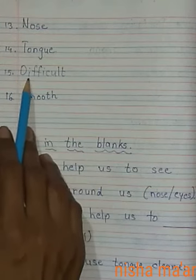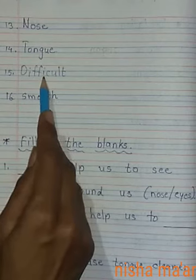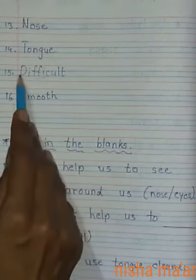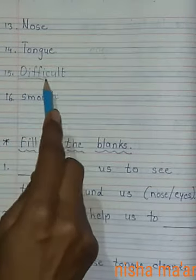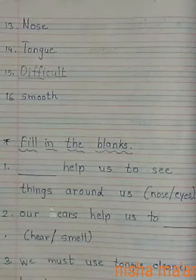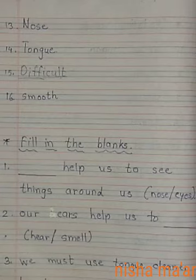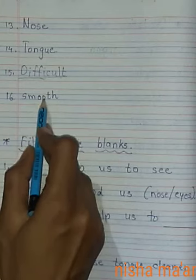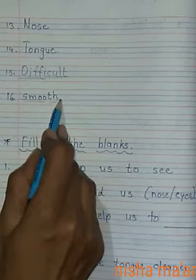D-I-F-F-I-C-U-L-T, difficult. Difficult means — नमुम्किन जैसा, बहुत हार्ड होता है। It is very difficult for me — मेरे लिए बहुत कठिन है, ऐसा होता है। S-M-O-O-T-H, smooth. Smooth, smooth.